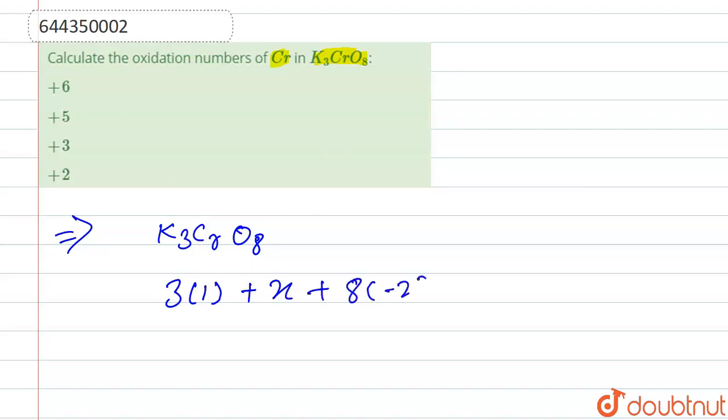So from it, x comes to 16 minus 3, that is 13. So it is wrong. This is not the oxidation state of chromium. The oxidation state of chromium is not equal to 13.